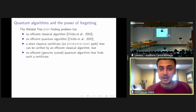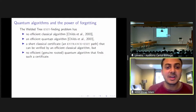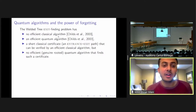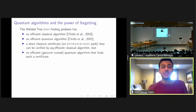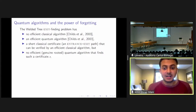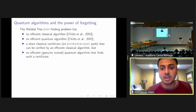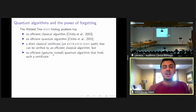Let me now conclude what we did and how this relates to our motivating question. We now know that the welded tree exit finding problem has no efficient classical algorithm and has an efficient quantum algorithm as shown by Childs et al., even though we need to redo the proof of classical hardness. There are also short classical certificates — basically entrance-to-exit paths — that can be easily verified by an efficient classical algorithm that traverses the path and checks if it reaches the exit. But we show in this result that there are no efficient genuine rooted quantum algorithms that find such a certificate.